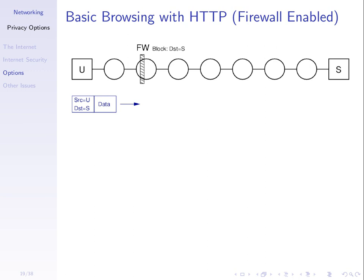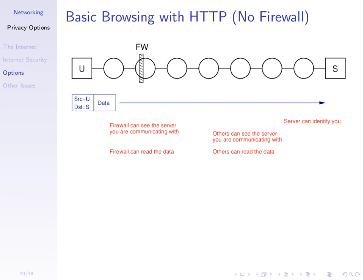What if the firewall was turned off — no rule to block access to that server — but we still use HTTP? We send our IP datagram from you to server S; it goes through the firewall because there's no blocking rule. Nothing is encrypted. If we're concerned about the owner or operator of the firewall — maybe your ISP, your government, or your employer — they can see the data because it's not encrypted. They can also see that it's you communicating with server S, so they can identify who is communicating.